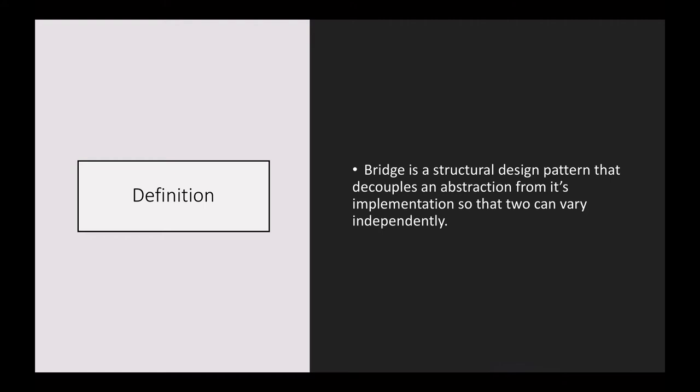What we need to identify is what is the abstraction and what is the implementation of that abstraction. After identifying what kind of abstraction and implementation exist in the codebase and what we are actually trying to decouple, only then can we understand the bridge pattern's intent. To understand this pattern, we will first take a look at some examples, then the UML diagram, and find exactly where the bridge lies.